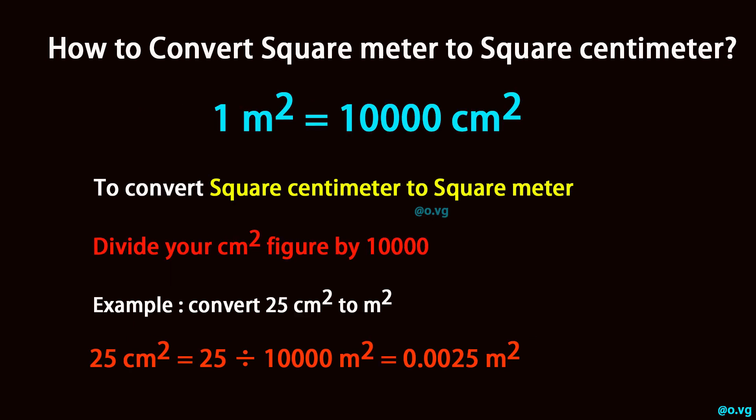To convert square centimeter to square meter, divide your square centimeter figure by 10,000.